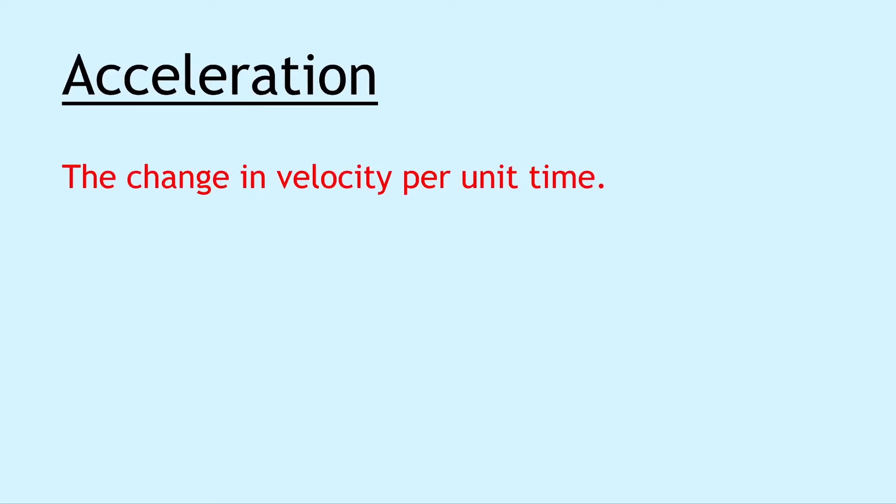Moving on we have acceleration, and acceleration is defined as the change in velocity per unit time, or the change in velocity each second. This is also a vector quantity and is given by the gradient of the line on a velocity time graph.